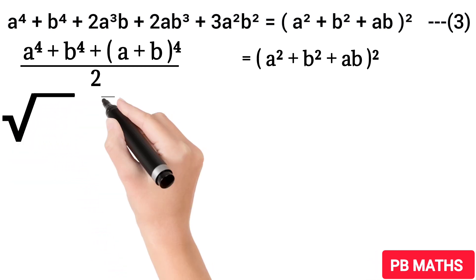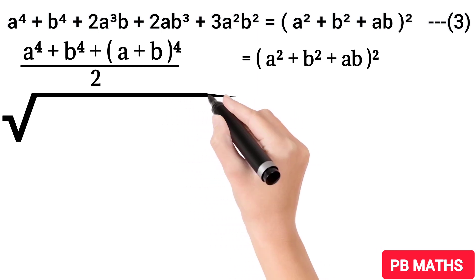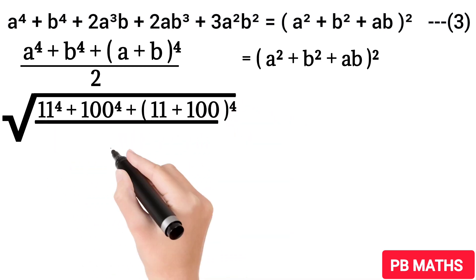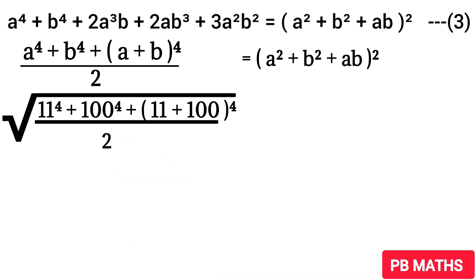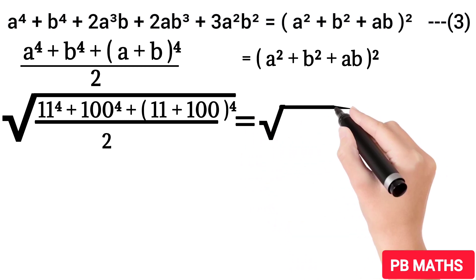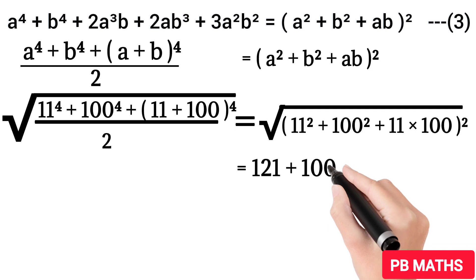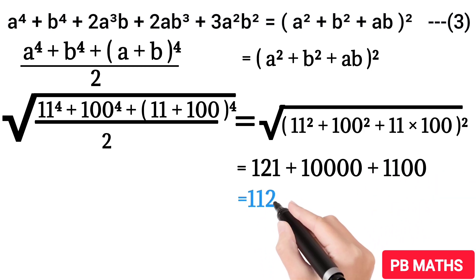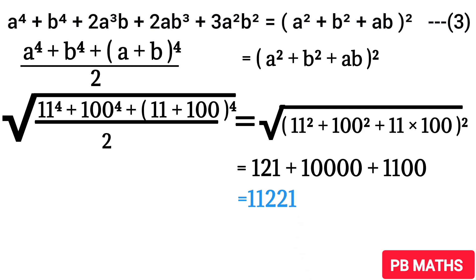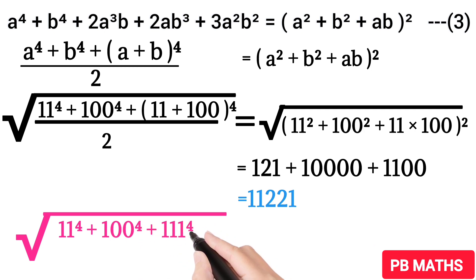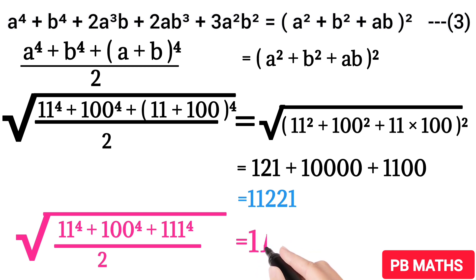Now let's apply square root on both sides and replace a by 11 and b by 100. Then the square root of 11⁴ plus 100⁴ plus (11 plus 100)⁴, whole divided by 2, equals the square root of (11² plus 100² plus 11×100) whole squared. On the right-hand side, the square root cancels. We are left with 11² which is 121, plus 100² which is 10000, plus 11×100 which is 1100. Adding all these gives us 11,221. That is the value of the square root of 11⁴ plus 100⁴ plus 111⁴, whole divided by 2. I hope you all got this answer. Thank you for watching the video.